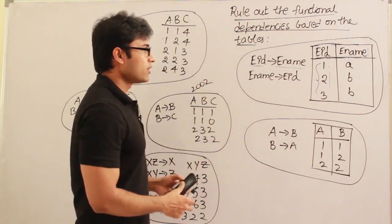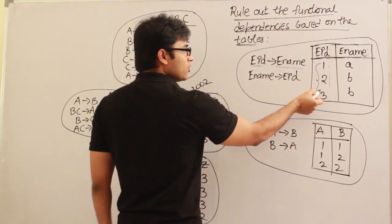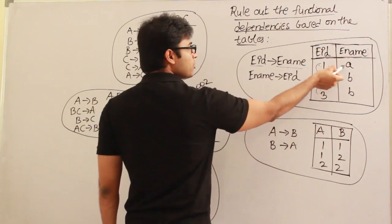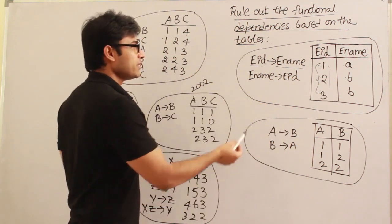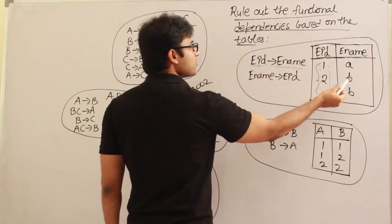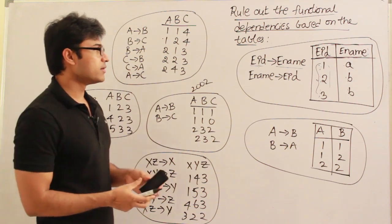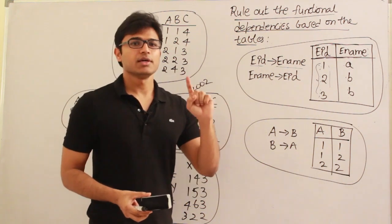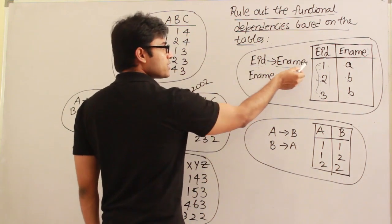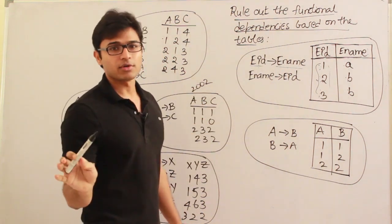Whenever the left-hand side is always unique, you can think that this functional dependency is valid. EID has to determine EName — given any EID, you have to come up with a unique EName. Since EID itself is unique, given any unique value you will say only one name. For example, EID=1 gives EName=A, EID=2 gives B, EID=3 gives B. So maybe this functional dependency would have existed — I cannot rule it out.